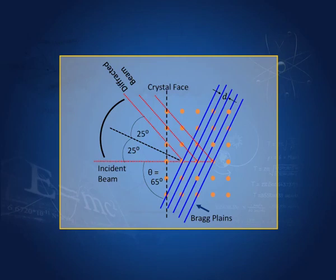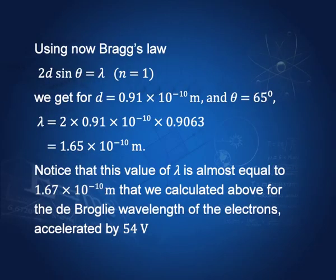The spacing between the Bragg planes is known by X-ray diffraction to be 0.091 nanometers. Using the Bragg relation 2d sinθ = λ for n equal to 1, with d being 0.091 × 10⁻¹⁰ meters and θ equal to 65 degrees, lambda is therefore 2 × 0.091 × 10⁻¹⁰ × 0.9063, which gives 1.65 × 10⁻¹⁰ meters.